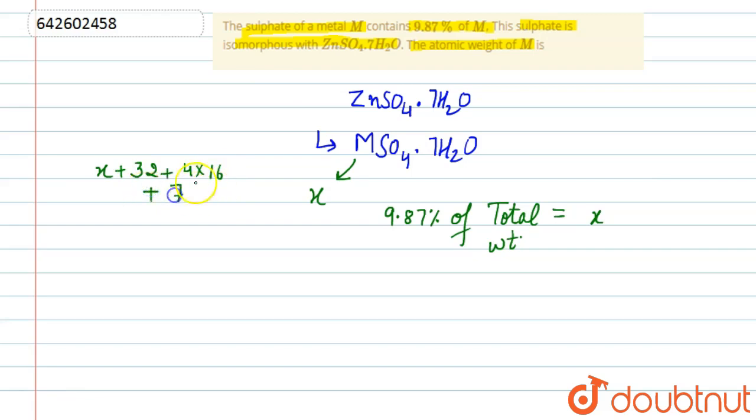Plus 7 times the molar mass of water, which is 18. So it will be 222 plus X.